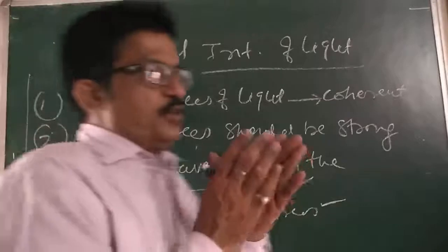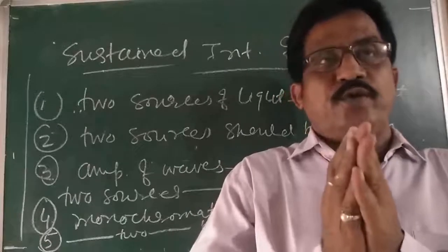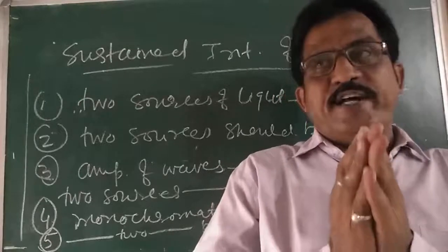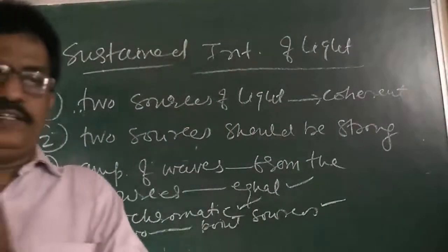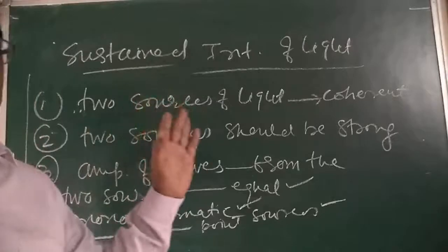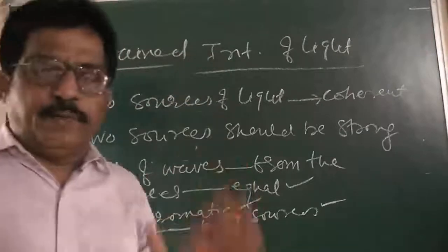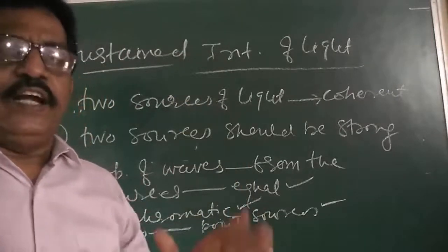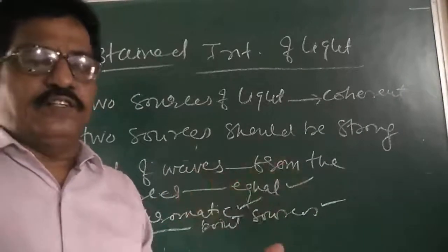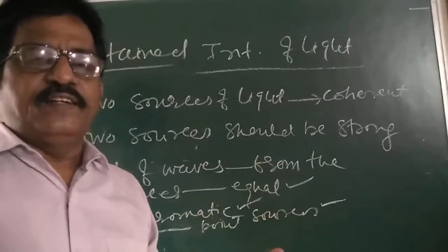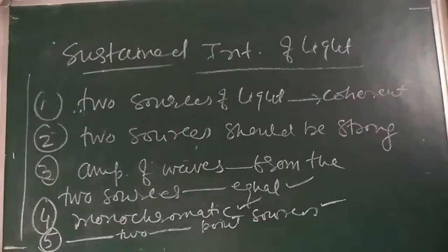So my dear children, today we saw the expression for fringe width — a very important topic for CBSE — and the conditions for interference of light. Definitely you will get this derivation or a simple numerical based on the fringe width formula in your exam. In our next module, we will see the last part of this chapter on optics — that is diffraction. Bye bye, thank you.